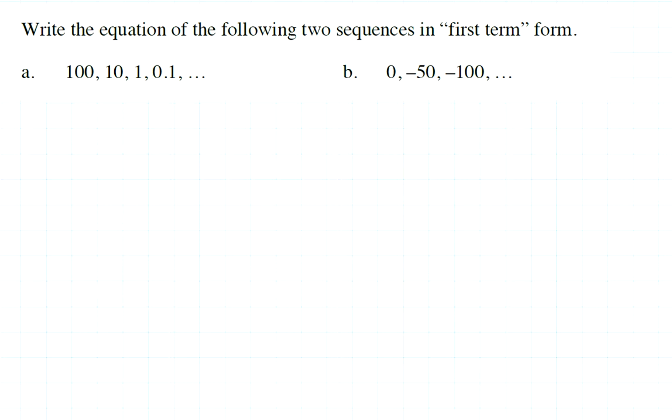So if I was to write this not in first term form, but just equation form, it would look like Y is equal to, remember, it's A times B to the X. I'm starting out at 100. My multiplier is either, I could write it as a fraction, 1 tenth, or it's just 0.10. And then to the X power.